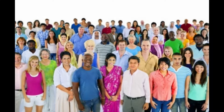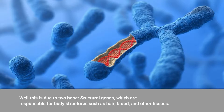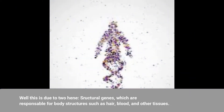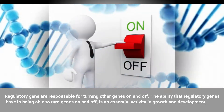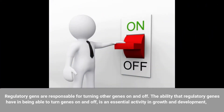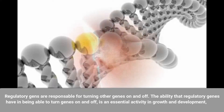This is due to two types of genes. First, structural genes, which are responsible for body structures such as hair, blood, and other tissues. Second, regulatory genes, which are responsible for turning other genes on and off. The ability that regulatory genes have to turn genes on and off is an essential activity in growth and development.